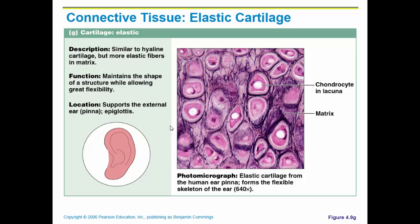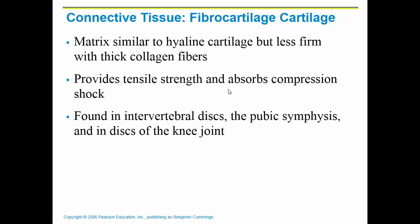Here is a picture of elastic cartilage. It is very similar to hyaline cartilage — it still has the chondrocyte in the lacunae — but you will see elastic fibers making it more pliable. The last type is fibrocartilage. Fibrocartilage is similar to hyaline cartilage but a little bit less firm. It is found anywhere that needs to absorb shock: between your vertebrae in those discs, at the pubic symphysis where your pelvic bone comes together in the front, and in the discs of the knee joint, which is called the meniscus.